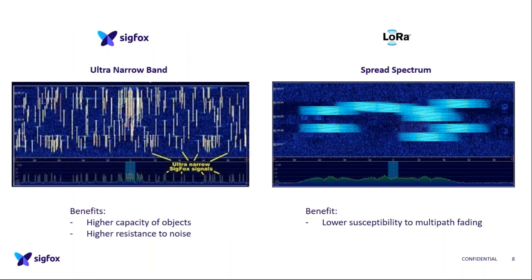The second difference between LoRa and Sigfox is the modulation approach for using the unlicensed spectrum. Sigfox uses ultra narrowband — the signal looks like a focused dot. The benefit is higher capacity, allowing hundreds of objects to communicate simultaneously in the same area, plus higher resistance to noise — like a laser you can distinguish very easily from background noise.